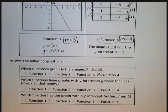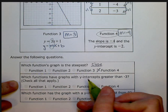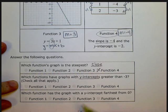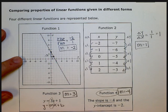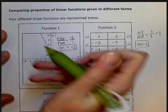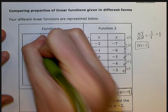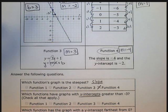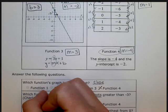The next question says, which functions have graphs with y-intercepts greater than negative 3? Check all that apply. So we need to go back now and look at each of these functions and find the y-intercepts. The first question asked about slope, the second question here asks about y-intercepts. So the y-intercept is where the graph crosses the y-axis. Here's the y-axis. So I'm going to go down here, and I see that the y-intercept, or b, is 3. So right away we get to check this question. Is a positive 3 greater than negative 3? Yes, it is. So I would mark function 1.